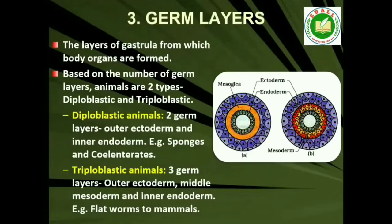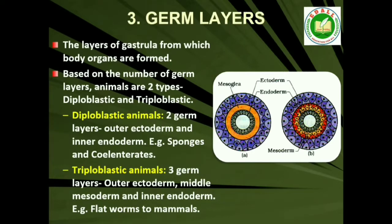3. Diploblastic and Triploblastic Organization: Animals in which the cells are arranged in two embryonic layers — an external ectoderm and an internal endoderm — are called diploblastic animals, e.g., coelenterates. An undifferentiated layer, mesoglea, is present between the ectoderm and the endoderm. Those animals in which the developing embryo has a third germinal layer, mesoderm, in between the ectoderm and endoderm, are called triploblastic animals — from Platyhelminthes to chordates.